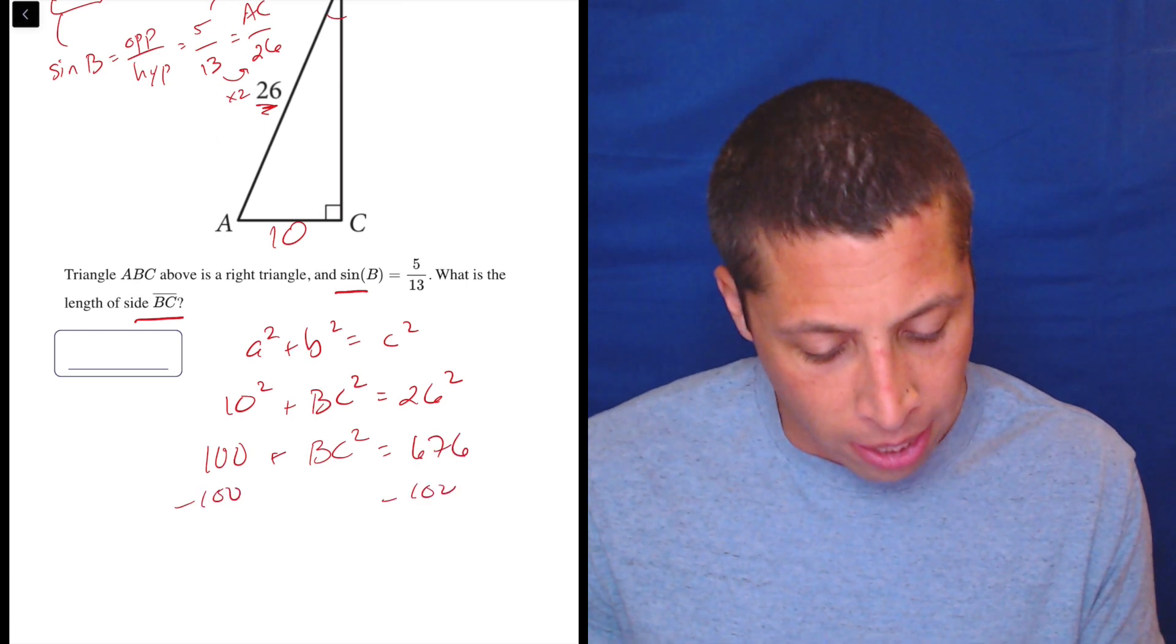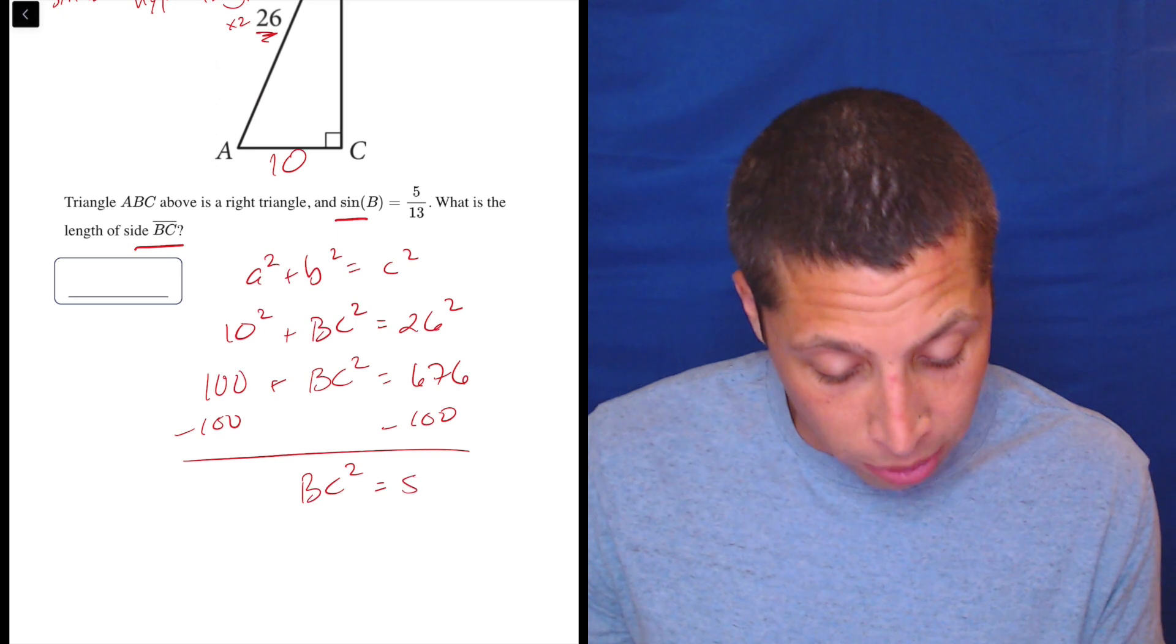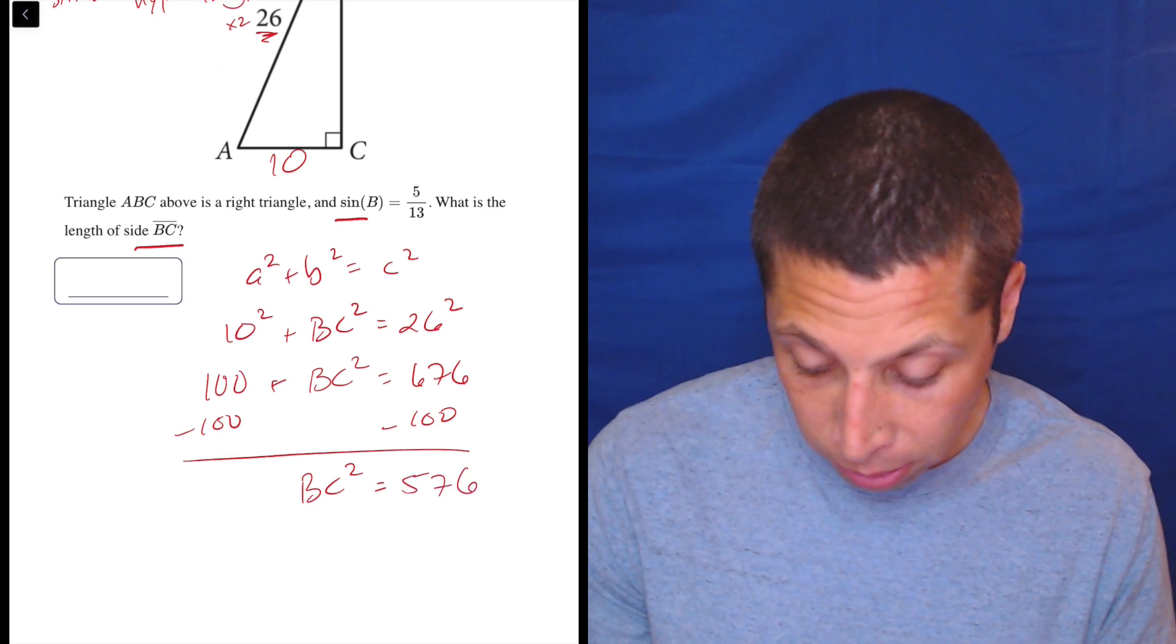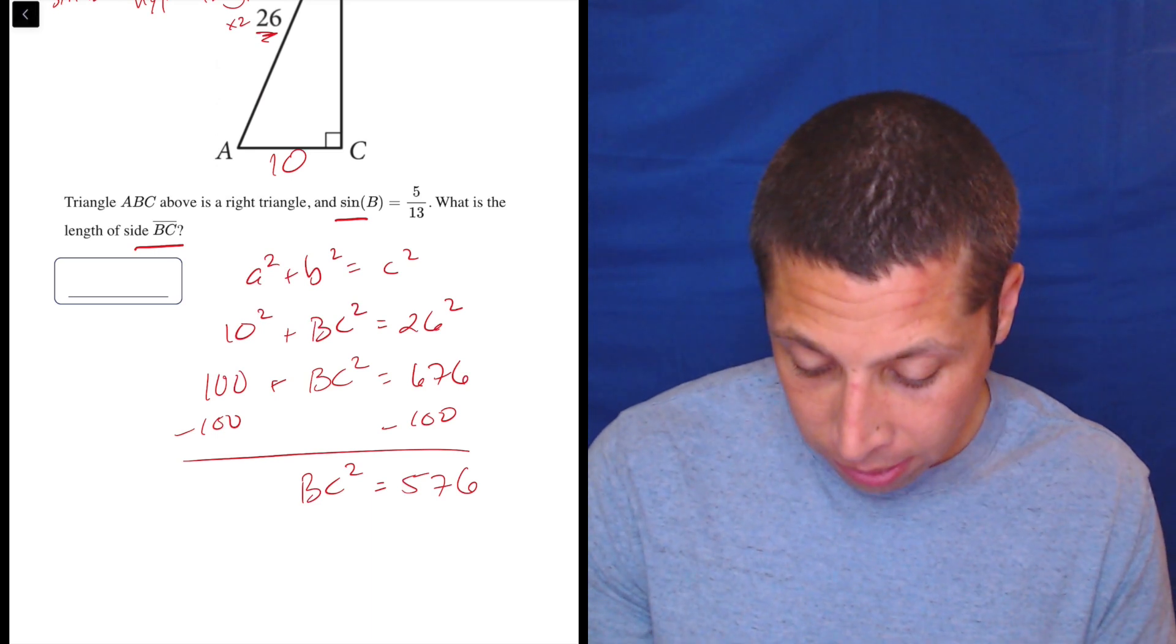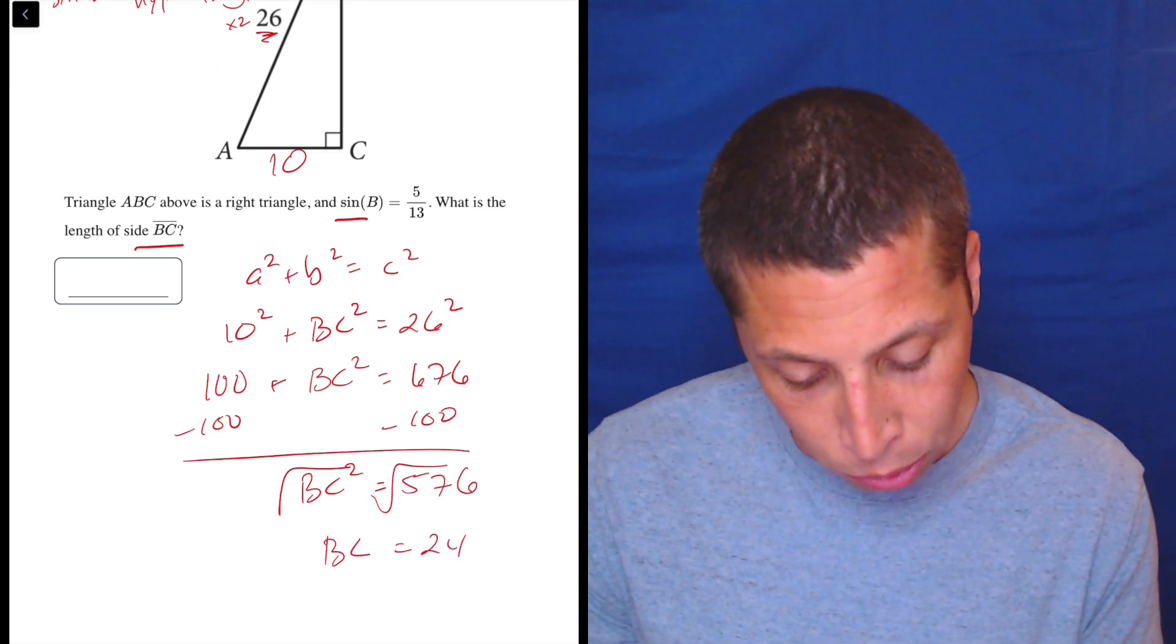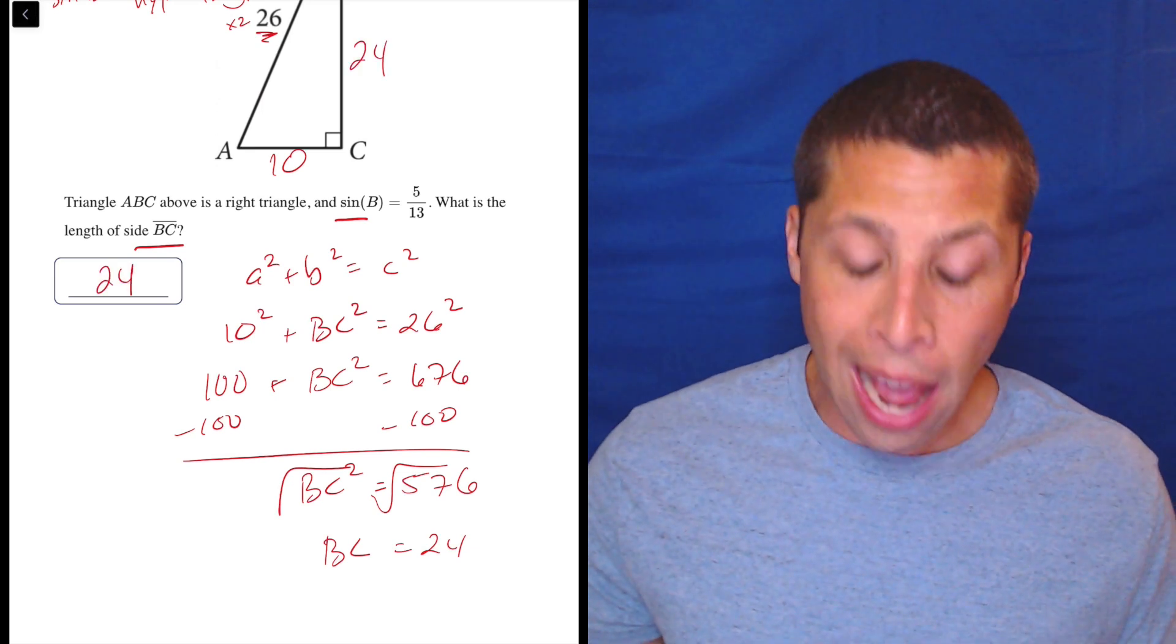We can do all this in Desmos. I think I did that on another question in this set, but we're going to continue with this process because I've already started it, and that's a bad habit to break. So let's take the square root of 576, and it is 24. So there you go. 24 is the answer.